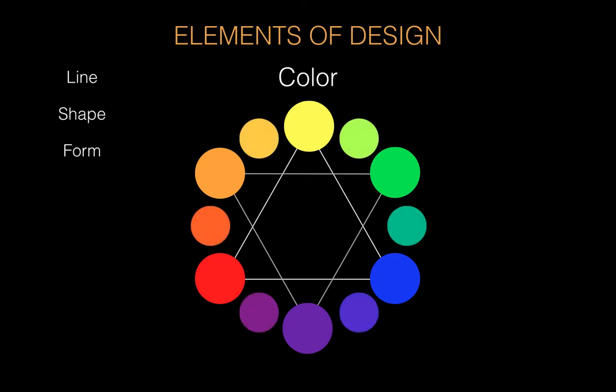Yellow plus green equals yellow-green, green plus blue equals blue-green. When naming these colors, you always name the primary first and then the secondary second. So blue and green: blue is the primary, green is the secondary, so the color in between becomes blue-green. Blue plus violet is blue-violet, red plus violet is red-violet, red plus orange is red-orange, orange plus yellow is yellow-orange. This gives you your full color spectrum.